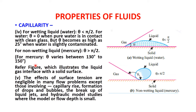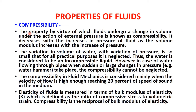For mercury, theta varies between 130° and 150°. The liquid-gas interface with the solid surface illustrates this: theta less than pi/2 for wetting liquids, theta greater than pi/2 for non-wetting. The effects of surface tension are negligible in many flow problems except those involving capillary rise, formation of drops and bubbles, breakup of liquid jets, and hydraulic model studies where model flow depth is small.